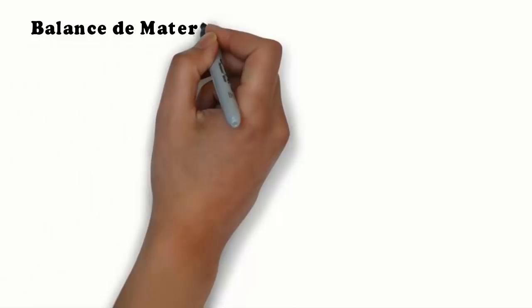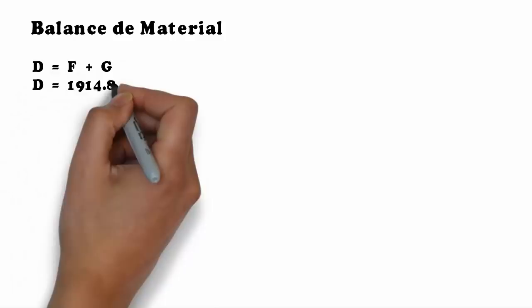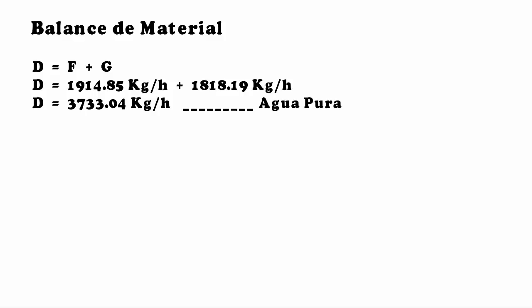Finally, we perform a mass balance to obtain the result for this inciso. D equals F plus G; therefore, D equals 1914.85 kg/h plus 1818.19 kg/h.